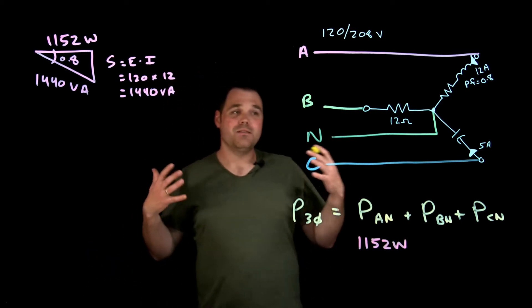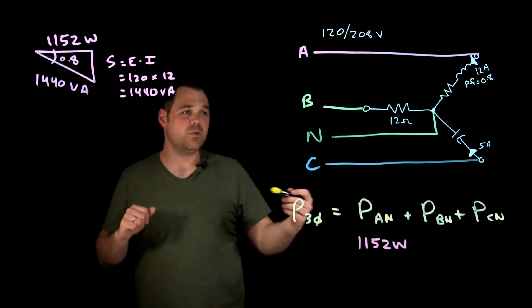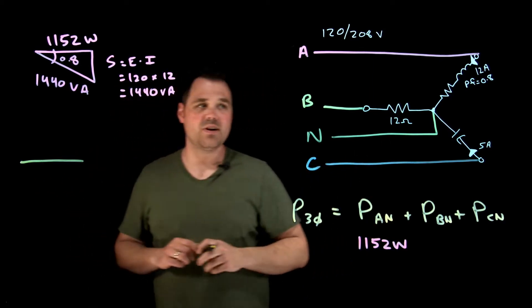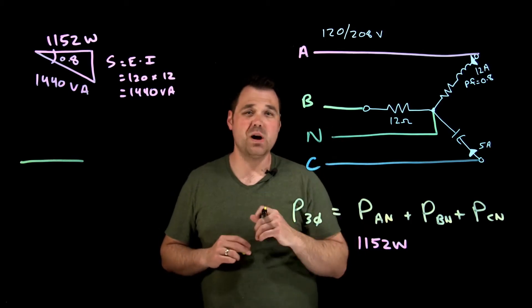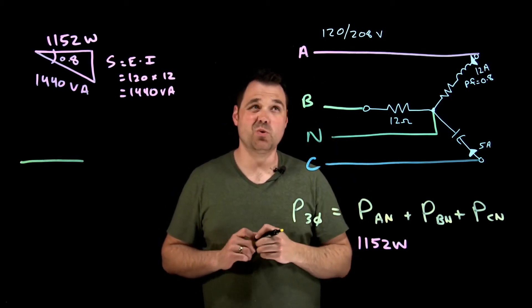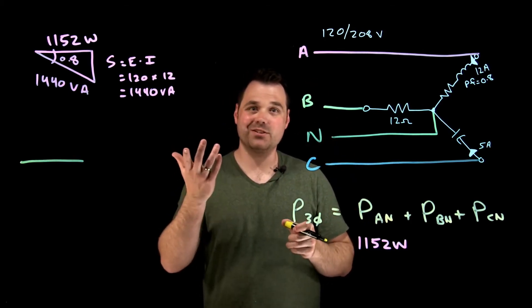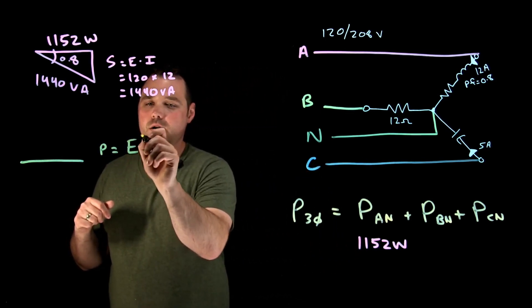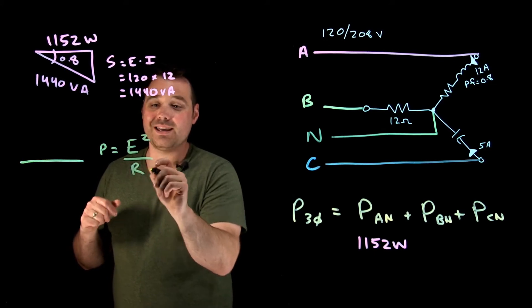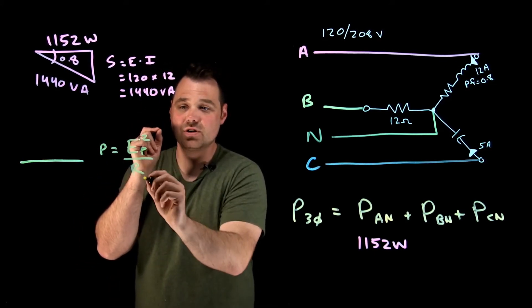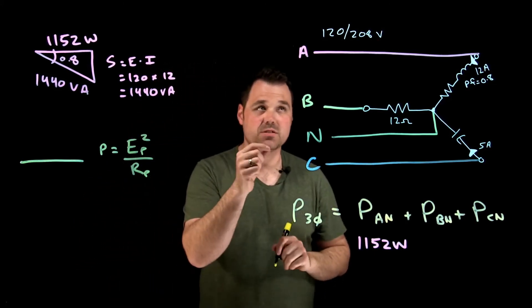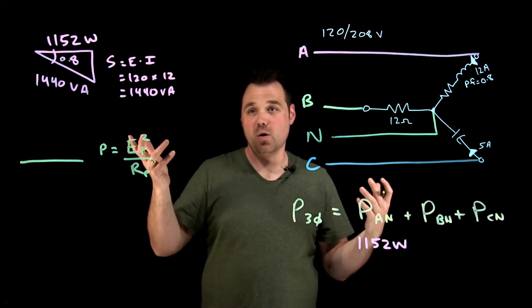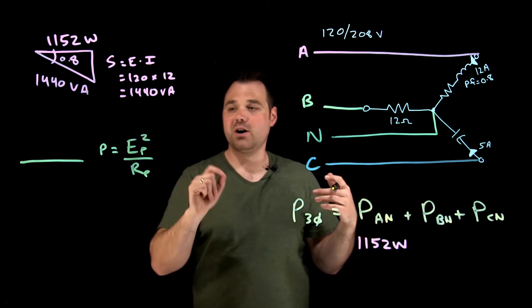Moving on to phase B. Phase B is a little different. What do I know about phase B? It is a resistor, so it's going to be all in-phase values, meaning it's all watts. I've got 12 ohms, I've got 120 volts. A couple of things I can do. I can go P equals E squared over R. Again, that's the phase voltage over the phase resistance. So 120 squared divided by 12 ohms, that is going to give me a power of 1200 watts.